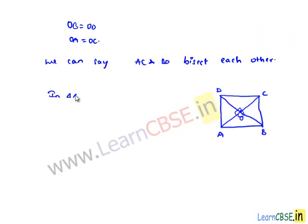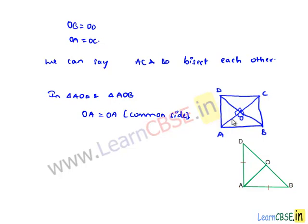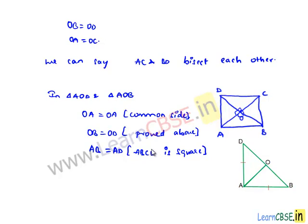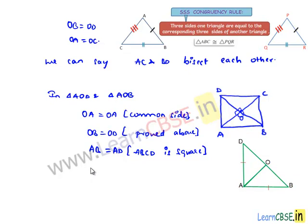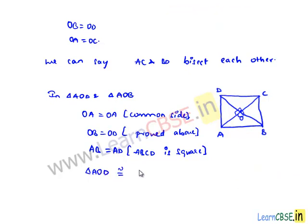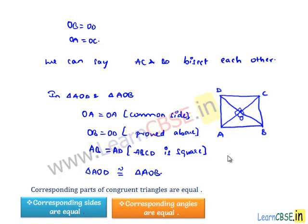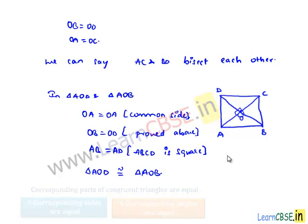Now let us consider triangle AOD and triangle AOB. OA will be equal to OA since it is a common side. We already proved that OB is equal to OD, and also we know that AB is equal to AD as ABCD is a square. So three corresponding sides of two triangles — AOD and AOB — are equal. By the SSS congruence rule, triangle AOD is congruent to triangle AOB. When two triangles are congruent, their corresponding angles and corresponding sides will be equal. So angle AOB is equal to angle AOD.